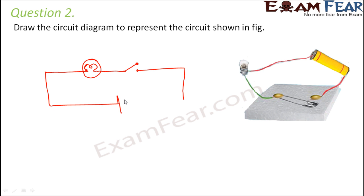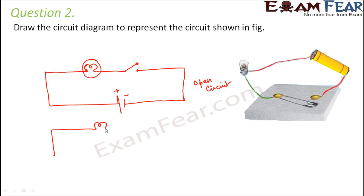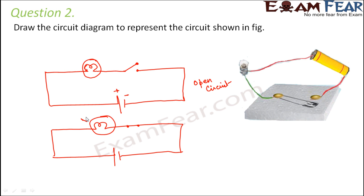We also draw a cell in the circuit. When the switch is open — that is, the circuit is open — there will be no current flow through the circuit; this is an open circuit. As soon as you switch it on, the circuit closes, the bulb starts glowing. This is a closed circuit where current flows through the circuit.